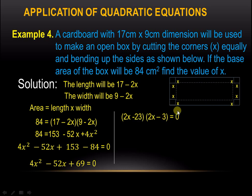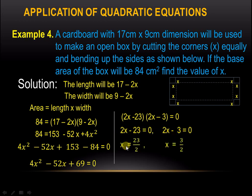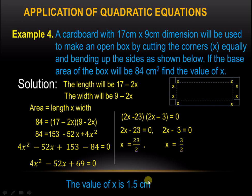Equating each factor to 0 and solving for x, we get x equals 23 over 2 and x equals 3 over 2. Are we going to consider both? If your answer is no, you're correct. When we subtract 23 over 2 from 9 cm, the result becomes negative. Therefore, the value of x is 3 over 2, or 1.5 cm.